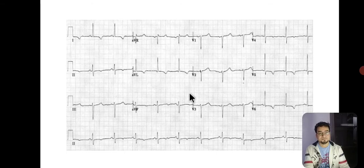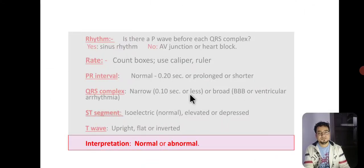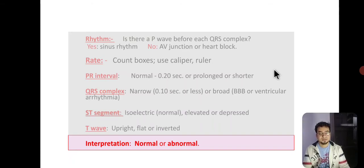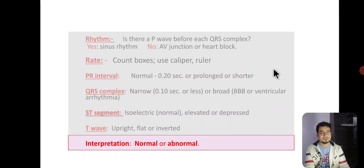After completing all steps of ECG interpretation, the final step is diagnosis — this is very important because after that you must treat. After careful analysis you must make a proper ECG diagnosis: is this normal or abnormal? If abnormal, what is the specific abnormality in terms of rhythm, rate, PR interval, QRS complex, ST segment, and T wave? Only then can you have a comprehensive and urgent treatment plan based on diagnosis.